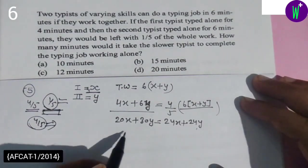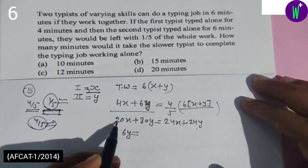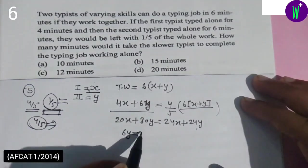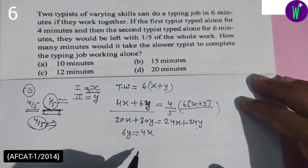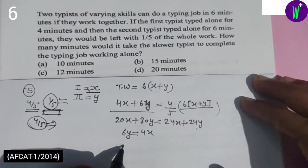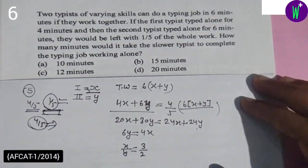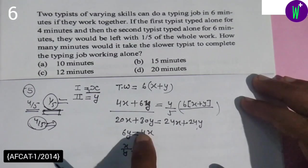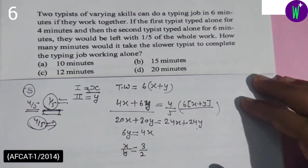6y equals 4x. So x upon y equals 3 by 2. If y equals 4, then x equals 3 by 2 times y.